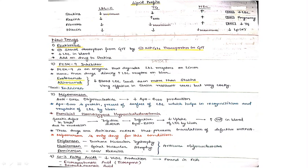Newer drugs: Ezetimibe inhibits cholesterol absorption from the gut by inhibiting the NPC1L1 transporter, decreasing lipid absorption. PCSK9 inhibitors — PCSK9 is the enzyme that degrades LDL receptors on the liver. These drugs inhibit PCSK9, resulting in increased LDL receptors on the liver and decreased blood LDL. Drugs include evolocumab and alirocumab.